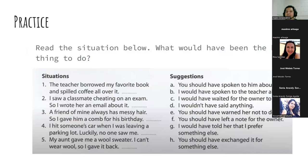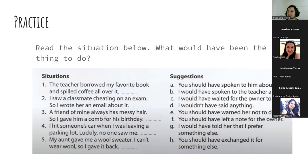We're going to read the situation and you give me the suggestion — what would have been the best thing to do? Number one: 'The teacher borrowed my favorite book and spilled coffee all over it.' What is the best suggestion? — Probably B — 'I would have spoken to the teacher about it.' Spoken is the past participle of speak. Very good. Number two: 'I saw a classmate cheating on an exam, so I wrote her an email about it.' What is the best suggestion? — You should have warned her not to do it again.